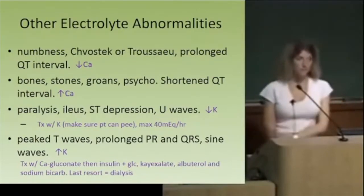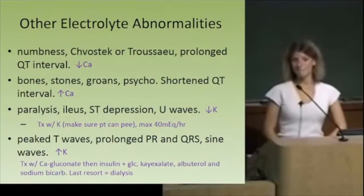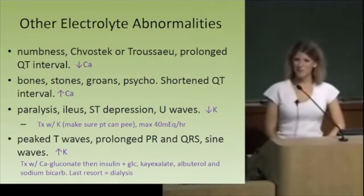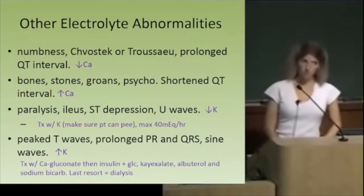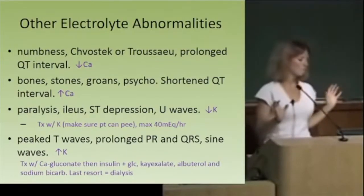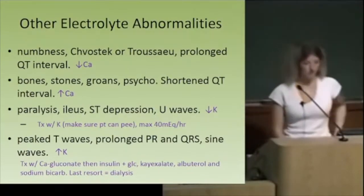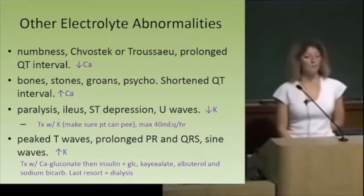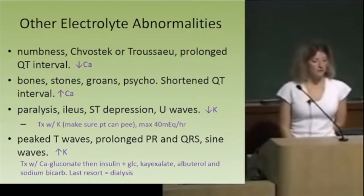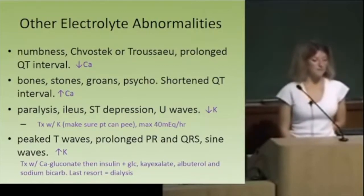You can give K-exalate, which basically makes you poop out potassium. Insulin with glucose drives the potassium into the cells. But we still have too much in our body, so we use diuretics to get rid of it. So the treatment regimen is: calcium gluconate, insulin and glucose, K-exalate. Albuterol works through a similar mechanism to insulin. And as a last resort, if the patient is really symptomatic and potassium is sky high, it's an indication for dialysis.